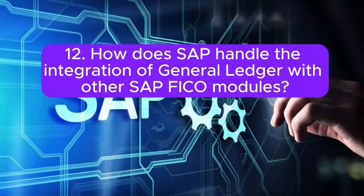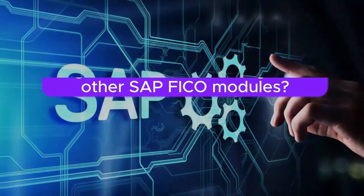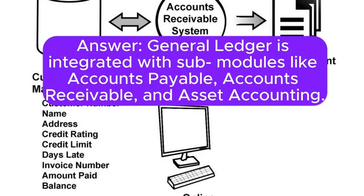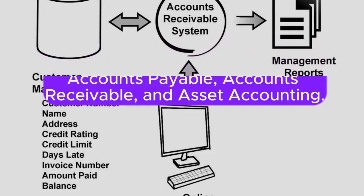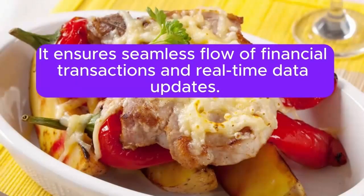Question 12: How does SAP handle the integration of General Ledger with other SAP FICO modules? Answer: General Ledger is integrated with sub-modules like accounts payable, accounts receivable, and asset accounting. It ensures seamless flow of financial transactions and real-time data updates.